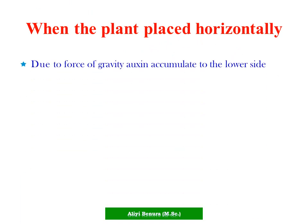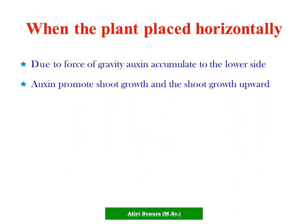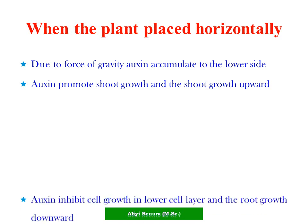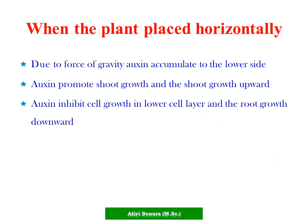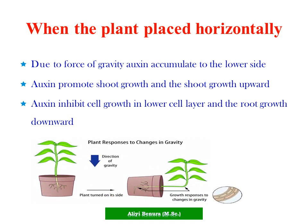When the plant is placed horizontally, due to the force of gravity, auxin accumulates on the lower side. Auxin promotes shoot growth and the shoot grows upward, while auxin inhibits cell growth in the lower cell layer of the root, and the root grows downward.